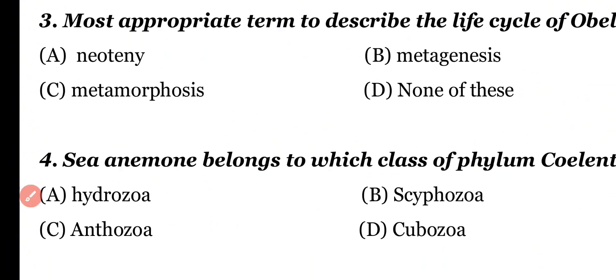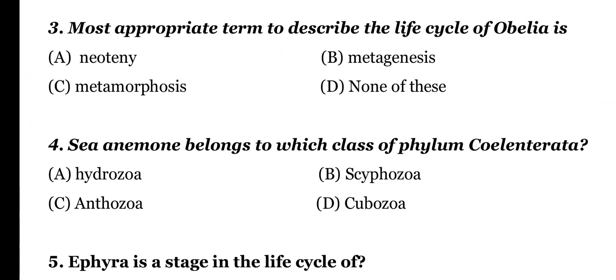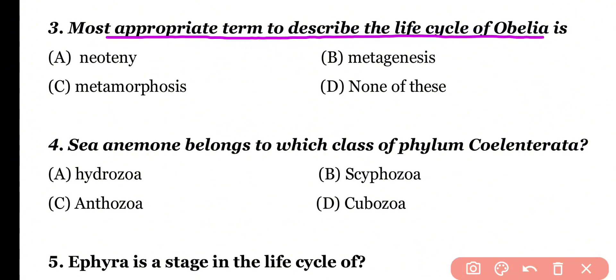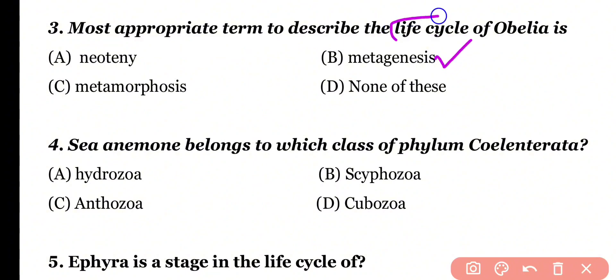Question number 3: The most appropriate term to describe the life cycle of Obelia is: Neoteny, Metagenesis, Metamorphosis, or none of these. Correct answer is option B. Polymorphism occurs in the life cycle of Obelia because both types of zooids — polyp and medusa — are present. That's why it is known as Metagenesis.